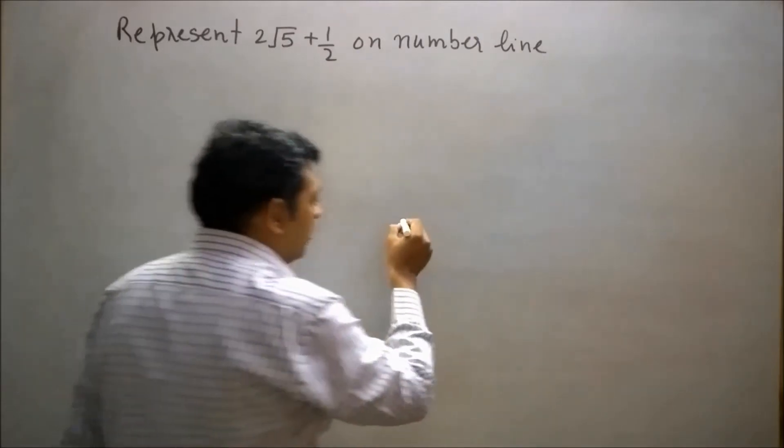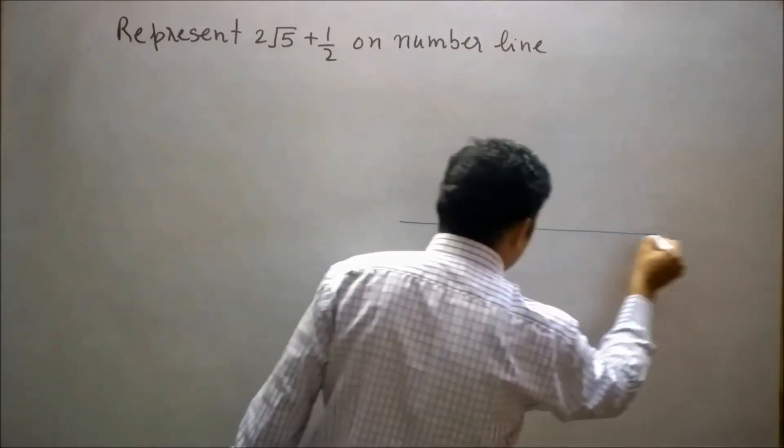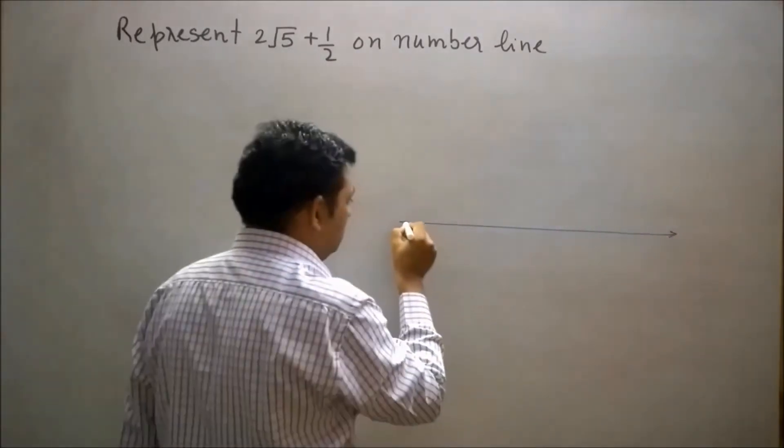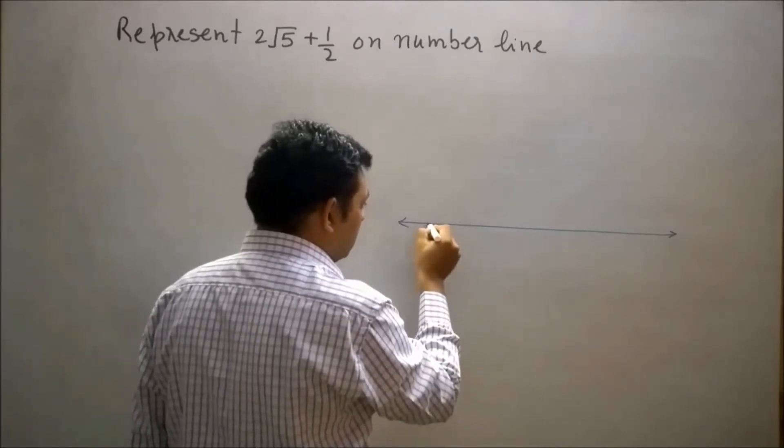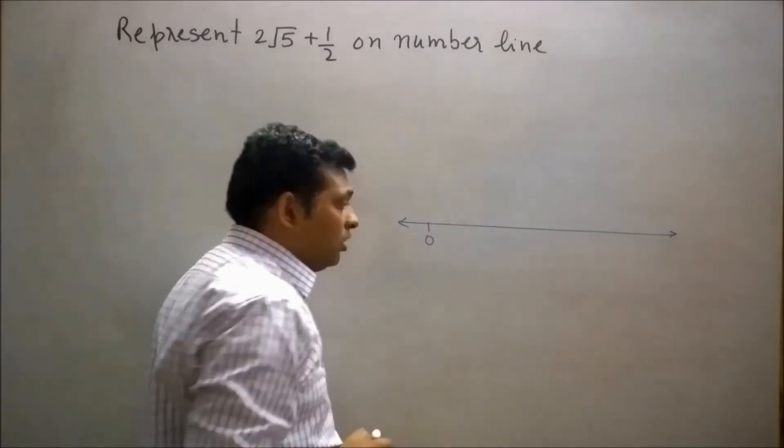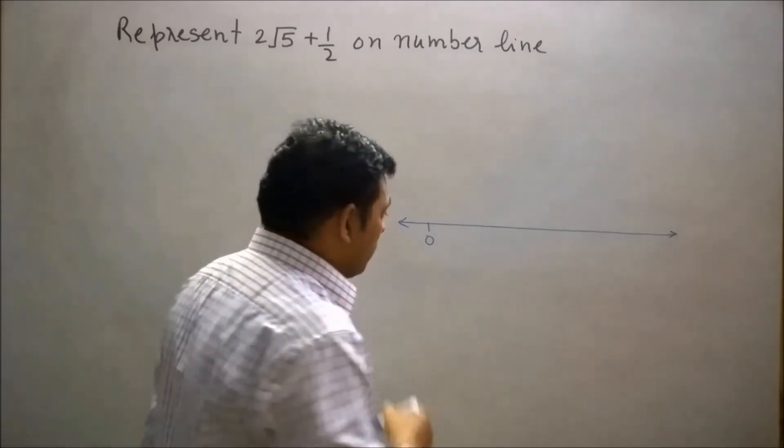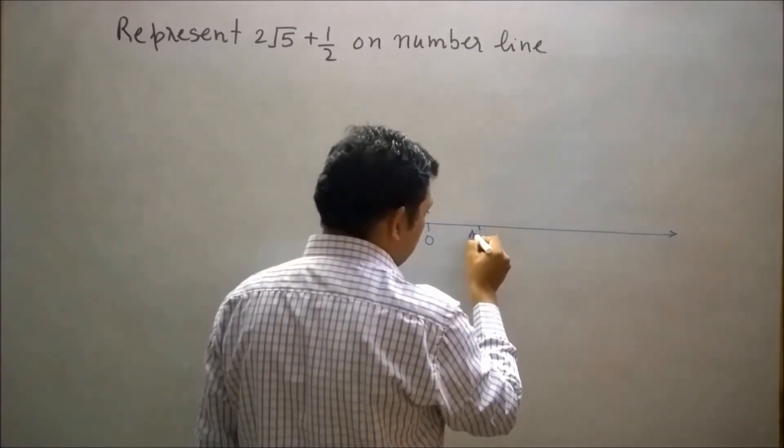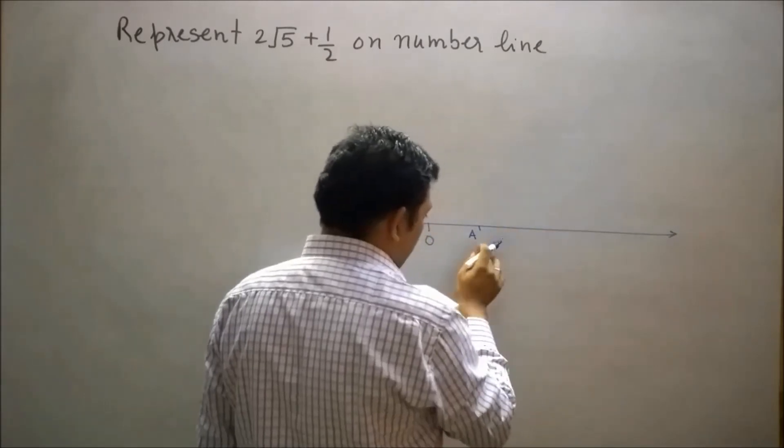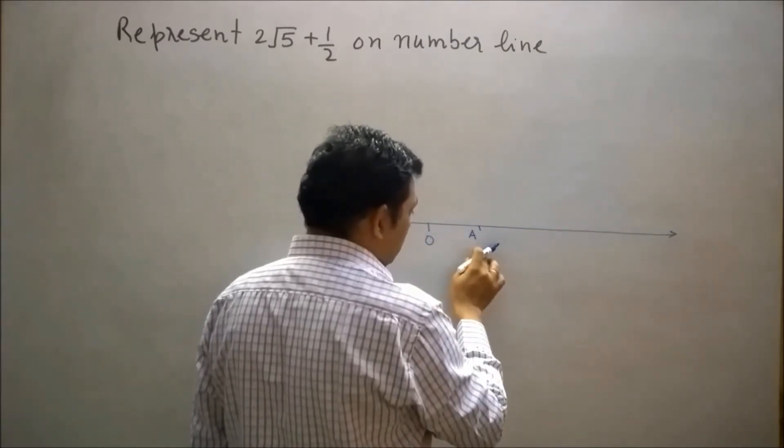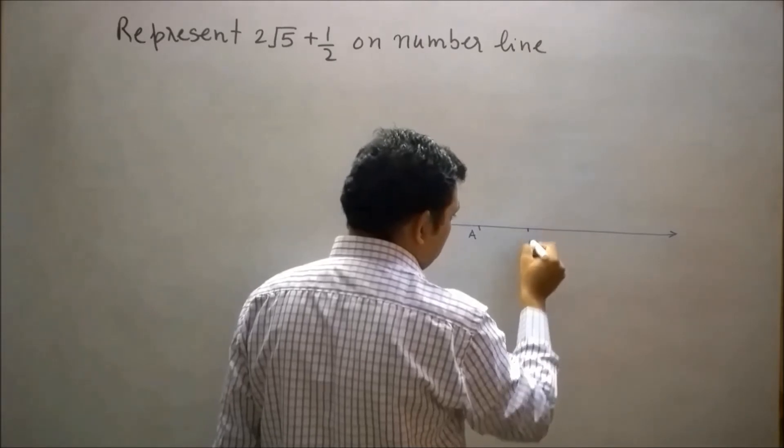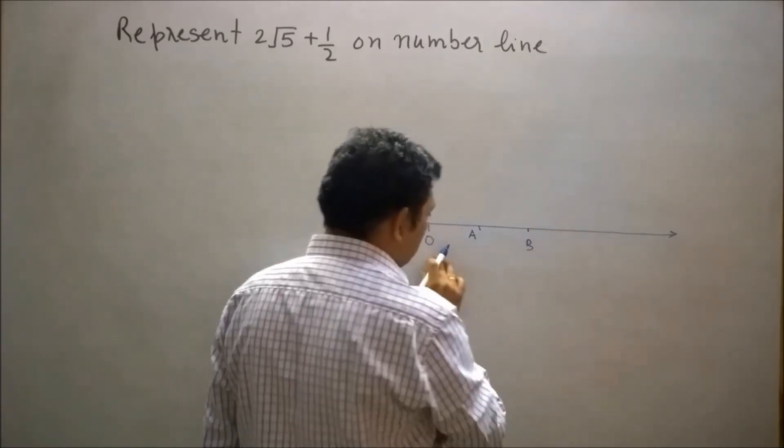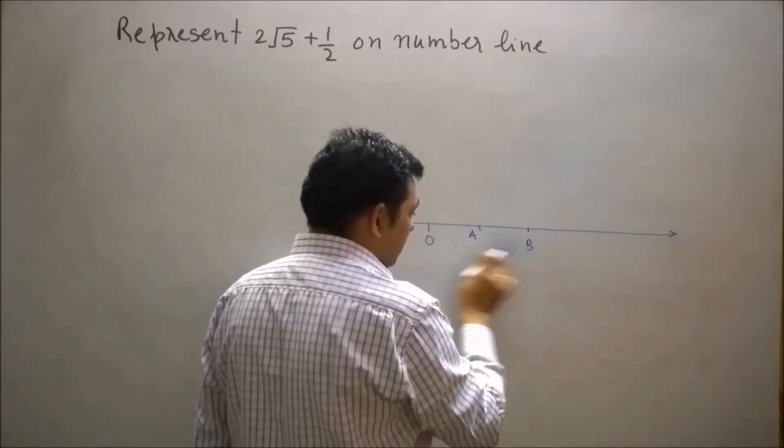First of all, I will draw a number line. Let's say this is our initial point O. Now move two unit distances from the right side of this initial point. Let's say this point is A, which is at one unit distance from initial point O. Let's say this point is B, which is at two unit distance from initial point O.